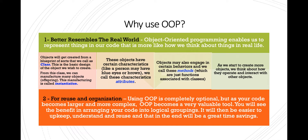Objects may also engage in certain behaviors — we call these methods, which are just functions associated with classes, so they'll look familiar to you. As we start to create more objects, we think about how they operate and interact with each other. The second reason is for reuse and organization. Using OOP is completely optional in Python, but as your code becomes larger and more complex, OOP becomes a very valuable tool. You will see the benefit in arranging your code into logical groupings — it will then be easier to upkeep, understand, and reuse, and that in the end will be a great time savings.